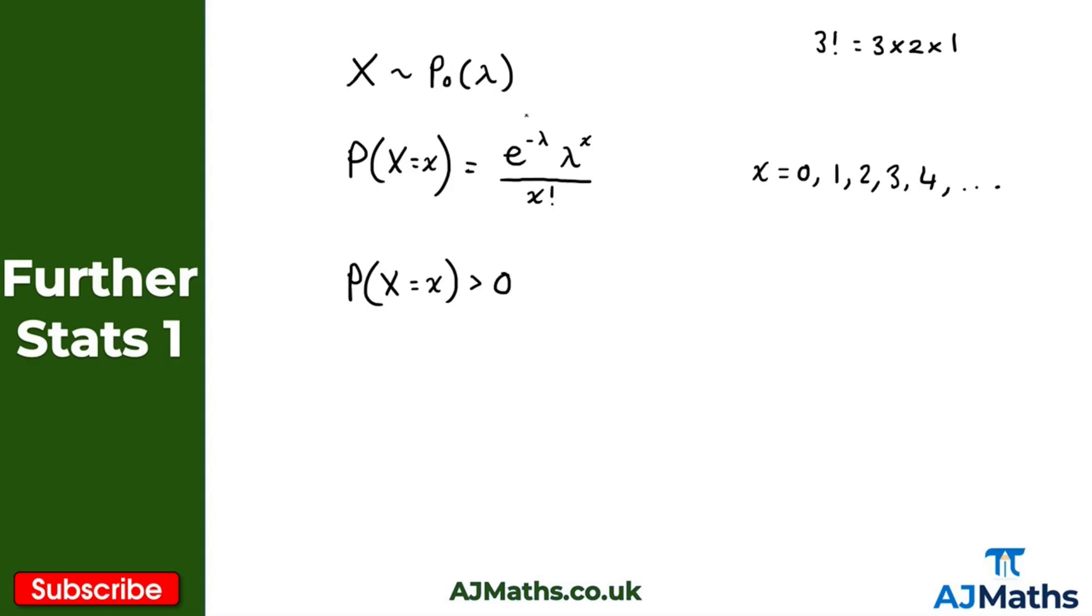Now this lambda here, the way we understand this is what we say is the parameter lambda in the Poisson distribution is the average number of times that the event will occur in a single interval. So that's what we mean by this concept of lambda here.